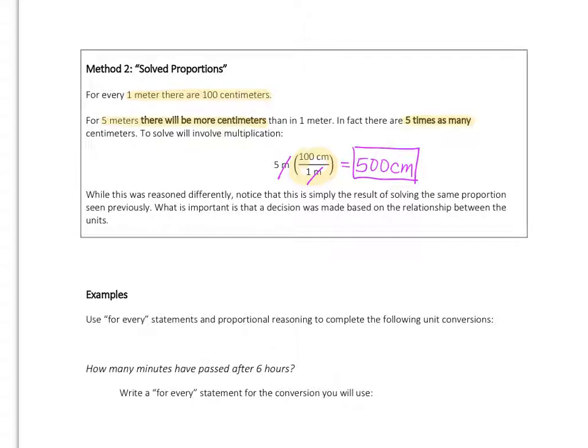We got to this in a different way, a different reasoning, and that's okay. It doesn't really matter. What's important is that you use some sort of decision that was based on the relationship between the units. Now notice that both answers that we had of 500 centimeters each had one significant figure, and that is because the 5 that we had from 5 meters only has one sig fig. So we want to keep the sig figs the same from what we started with to what we converted into.